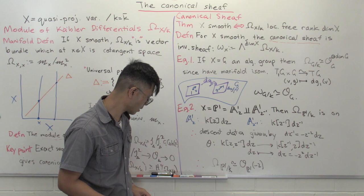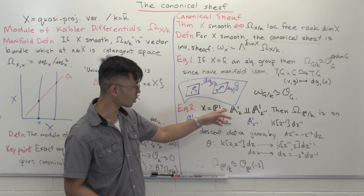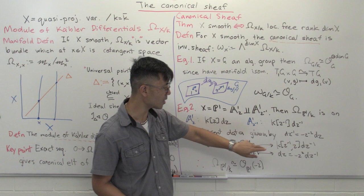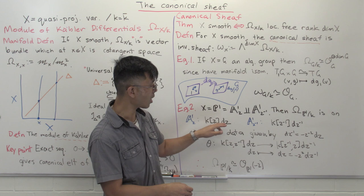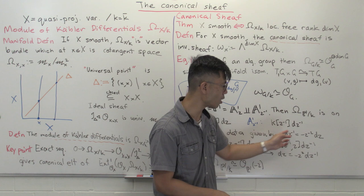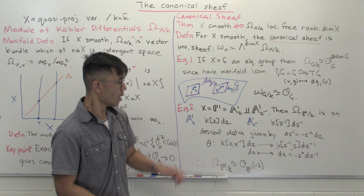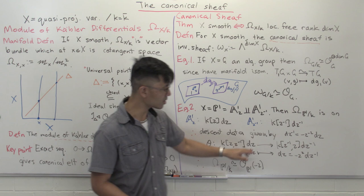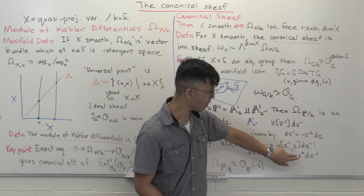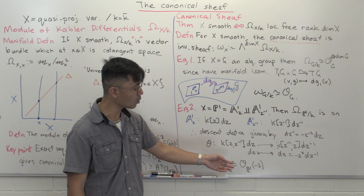To glue, you localize to the intersection: invert z to get k[z, z^{-1}]·dz, and invert z^{-1} to get k[z^{-1}, z]·dz^{-1}. The key is using calculus to work out the change of variables: differentiating z^{-1} with respect to z gives minus z^{-2}, so dz^{-1} = −z^{-2} dz. Solving for dz in terms of dz^{-1} gives dz = −z^2 dz^{-1}. Since the transition function sends the generator dz to −z^2 times the generator dz^{-1}, that factor of z^2 tells you the invertible sheaf needed is O(−2). So the canonical sheaf on P^1 is O(−2).